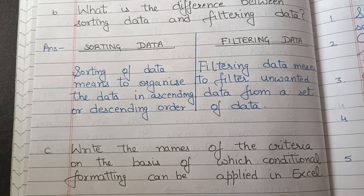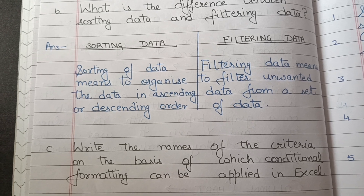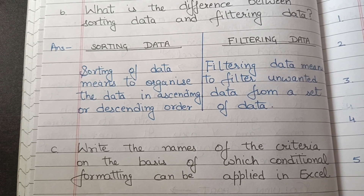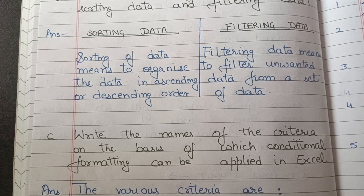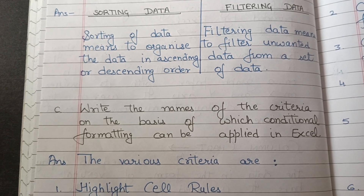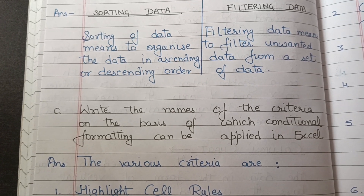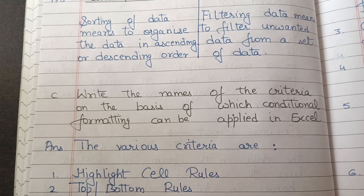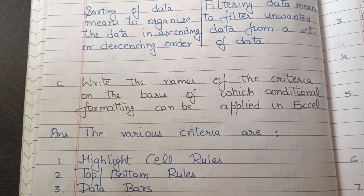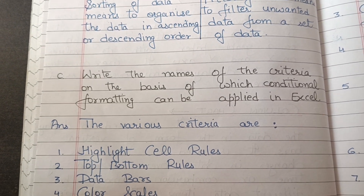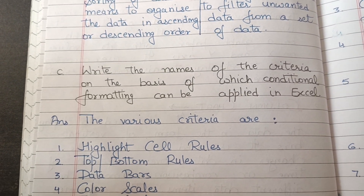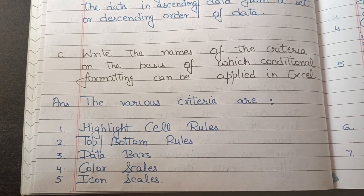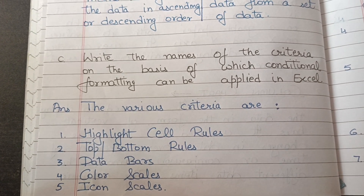Write the names of the criteria on the basis of which conditional formatting can be applied in Excel. The various criteria are: highlight cell rules, top and bottom rules, data bars, color scales, and icon sets.